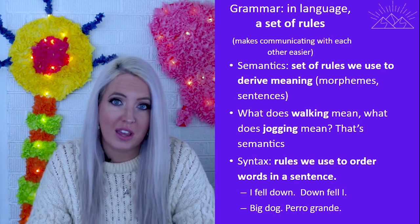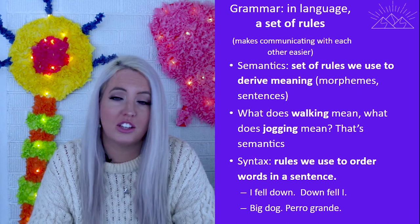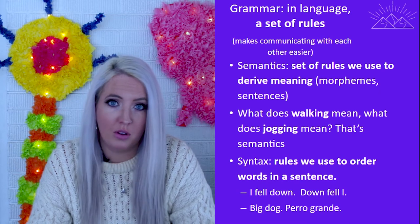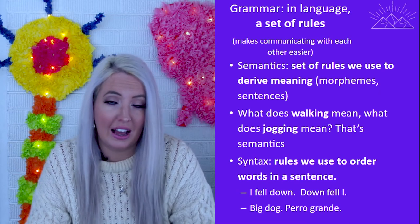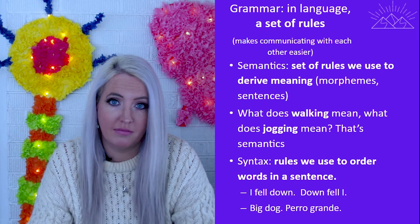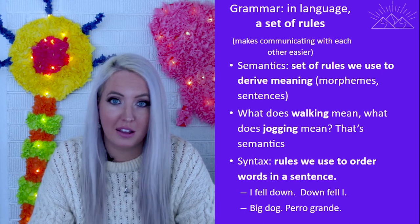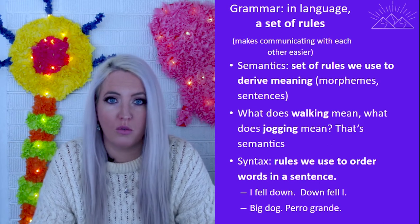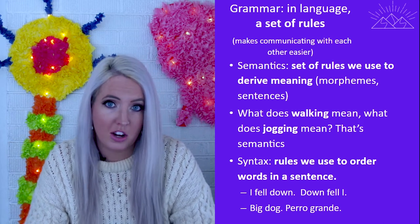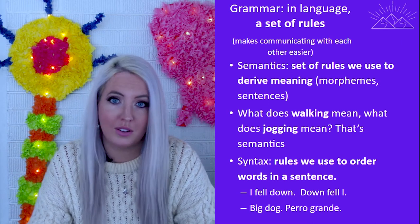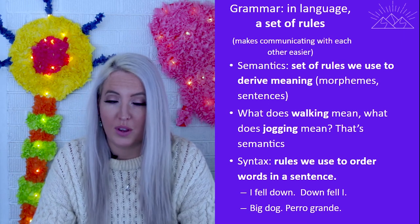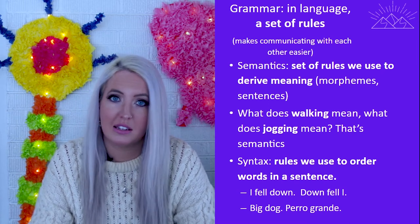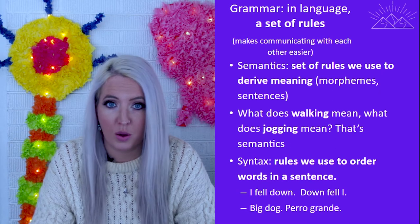The other component of grammar is syntax — the rules about the order of words. In English, for example, we say 'I fell down,' not 'down fell I,' unless we're trying to speak like Yoda. Different languages have different rules about word order. In Spanish they might say 'pero grande,' but in English we say 'big dog.' So semantics and syntax vary from language to language.